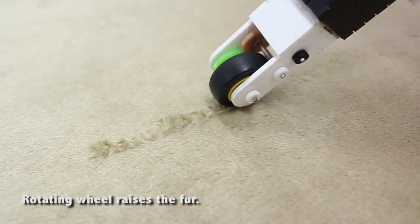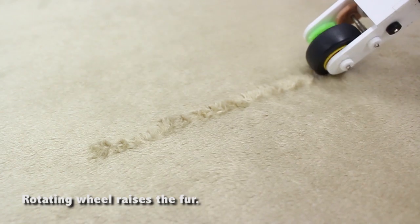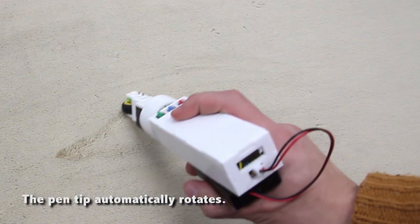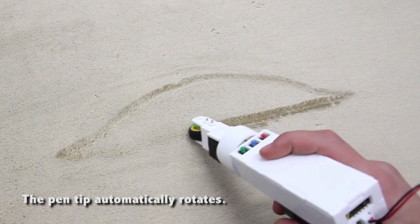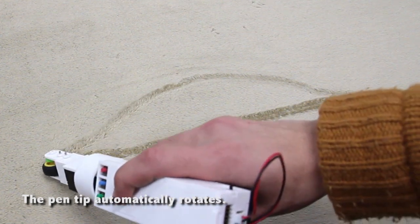The second device is the pen type device. This device uses a rotating wheel to raise the fur. To allow for a clear drawing, the pen tip automatically rotates so that orientation and rotation are parallel to the direction of the fur's growth.